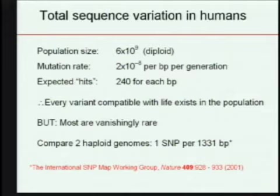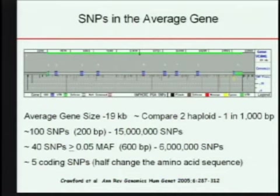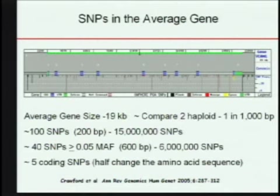To put this in context: if an average gene is 20 KB, we'd expect about 100 SNPs per gene, which translates to about 15 million common SNPs across the whole genome. There are about 40 common SNPs inside a gene and about 6 million common SNPs total — those with minor allele frequencies greater than 5 percent in the population. We'd expect five coding SNPs per gene, half of which change the amino acid sequence. Genes are not that different from intergenic regions in terms of SNP density.